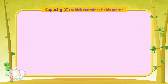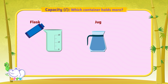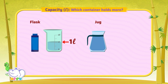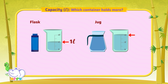Which container holds more, flask or jug? Let's find the capacity of the flask. The capacity of the flask is 1 liter. Let's find the capacity of the jug. The capacity of the jug is 2 liters. 1 liter is less than 2 liters. So the jug can hold more.